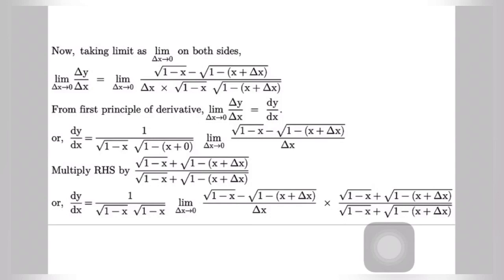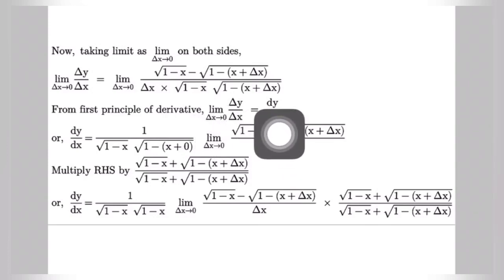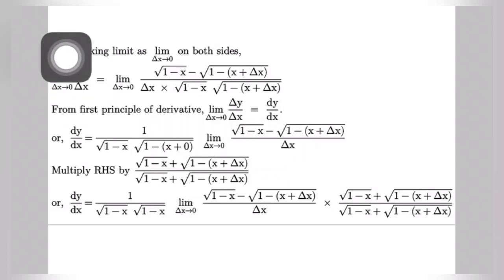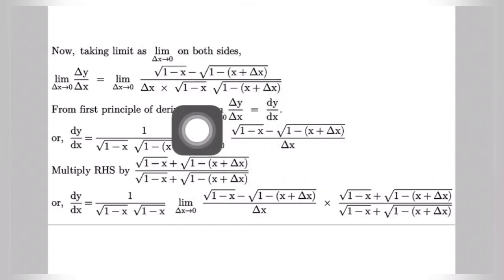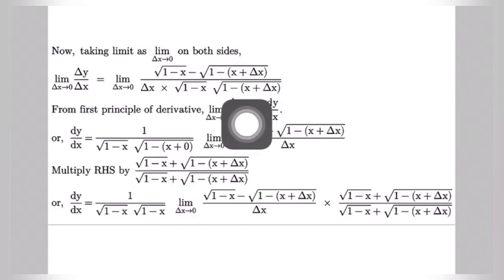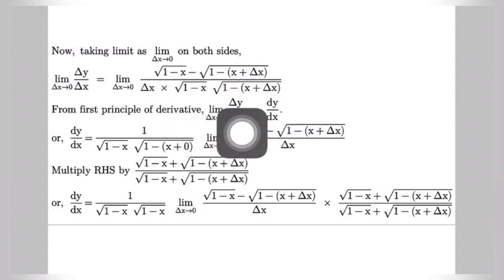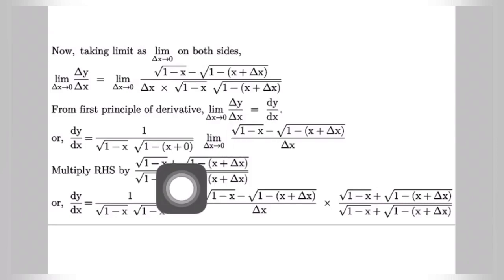From the first principle of derivative we know that limit del x tends to 0 of del y by del x is equal to dy by dx, which means the derivative of y with respect to x. Replacing this term by dy by dx, we get dy by dx equal to 1 divided by root under 1 minus x times root under 1 minus x plus 0, times the limit del x tends to 0 of root under 1 minus x minus root under 1 minus x plus del x, divided by del x. The factor root under 1 minus x times root under 1 minus x plus del x does not give an indeterminate form, so we take it out from the limit using del x equal to 0.